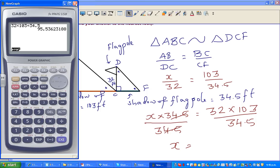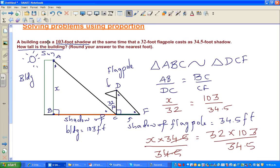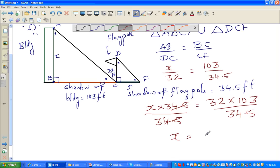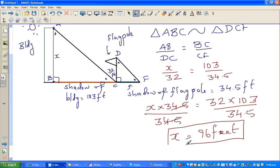That is 95.5, which rounds to 96 feet when rounding to the nearest foot. So 96 feet is the height of the building. See you in the next video.